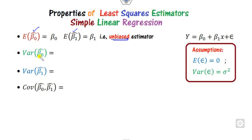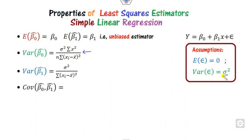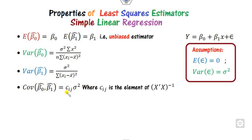To find the variances of the estimators, you can use a simple rule involving sigma square, summation x square, and x-bar — the sample mean. If x_i's and y_i's are given, you can easily compute these. For the covariance, if asked, you can use the elements C_ij of the matrix (X-transpose X) inverse.